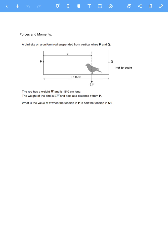So I'm going to go through the answers now. By answer, I mean the answer to this one. Hopefully you've had a go at this. A bird sits on a uniform rod suspended from vertical wires P and Q. It gives you a diagram. The rod has a weight W and is 15 centimeters long, so we'll have that weight acting in the center.